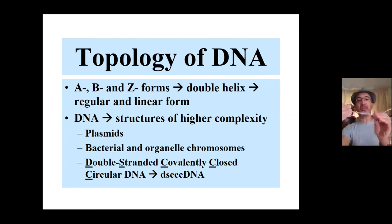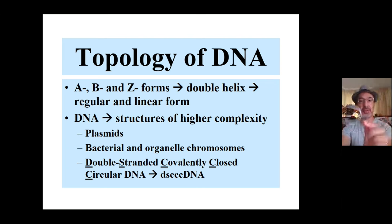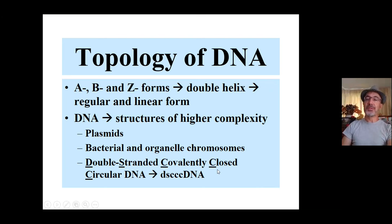When you take a linear DNA molecule and close it, you generate a circular DNA molecule that is relaxed, and this is equally a different topoisomer compared to a supercoiled one. Closed DNA molecules exist everywhere — like plasmids, and bacterial and organelle chromosomes such as mitochondria and chloroplast chromosomes — all defined as closed molecules, referred to as double-stranded, covalently closed, circular DNA molecules.